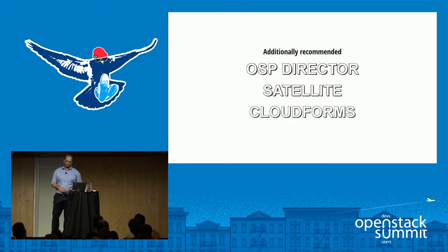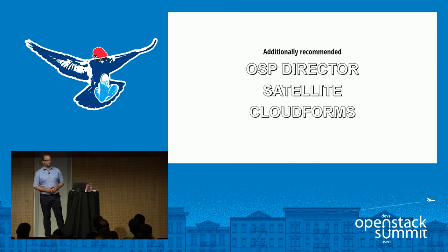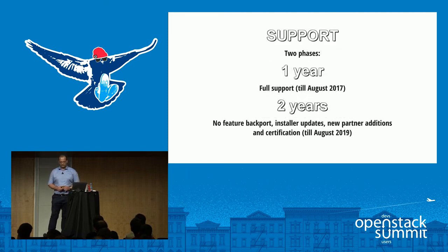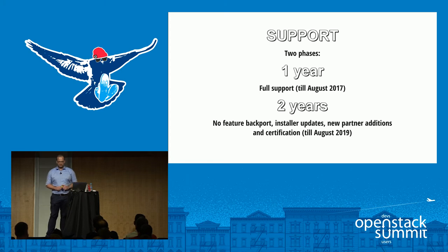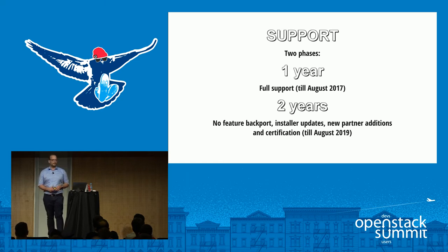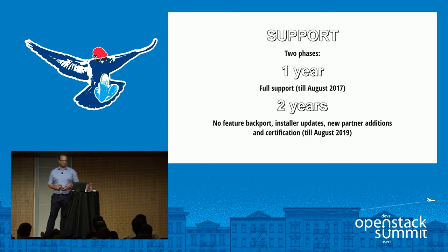Additional recommended products include OSP Director and Satellite to manage things around the products and Cloud Forms. For support, Red Hat provides full support on day one — including potentially new features if you agree. In the additional two years, you still get support for bug fixes basically, but no back-ports for drivers or packages and no installer updates. Pricing is based on socket pairs and machines, and it highly depends on what kind of support you want: business hours only, 24/7, special SLAs, or very short reaction times. Also depends on whether you're running RHEL guests. Default prices are usually not what you end up paying.